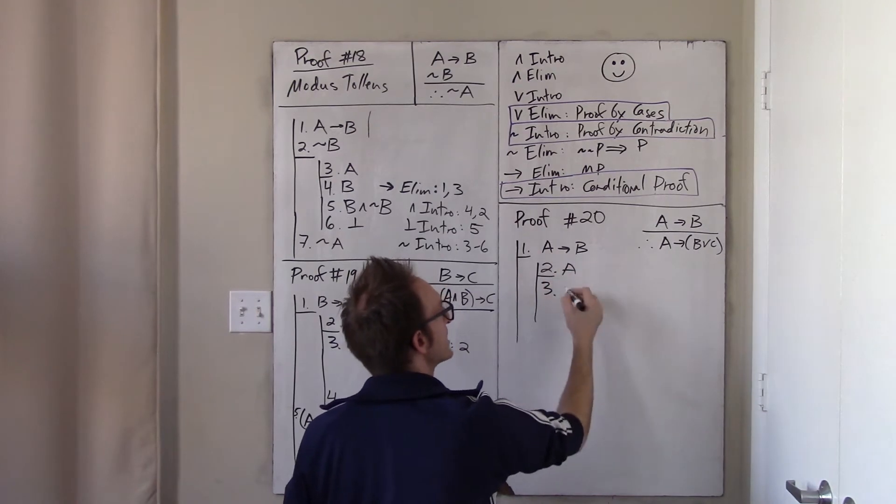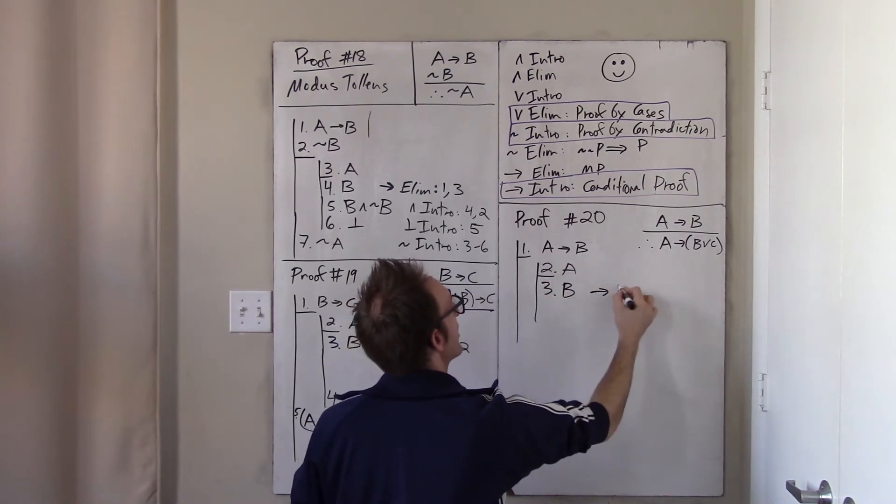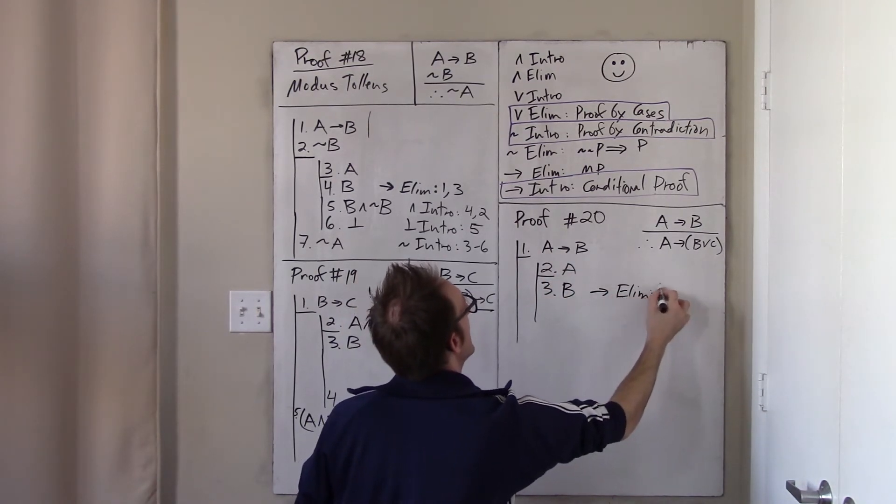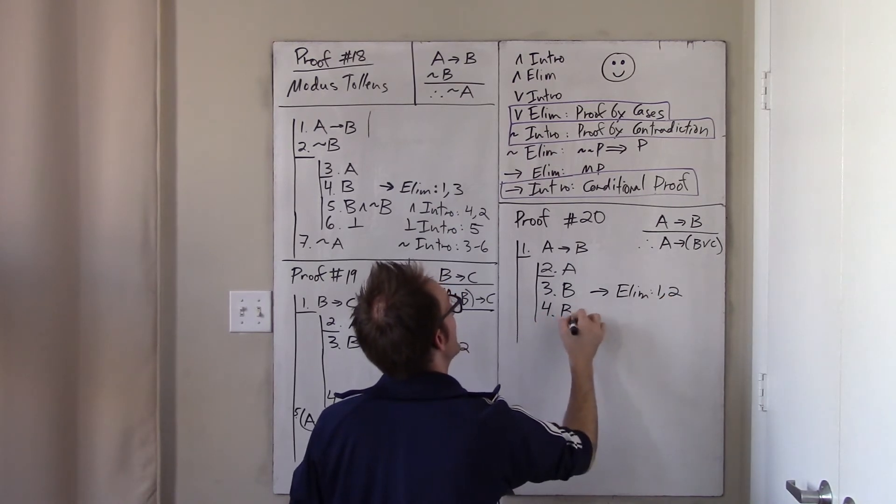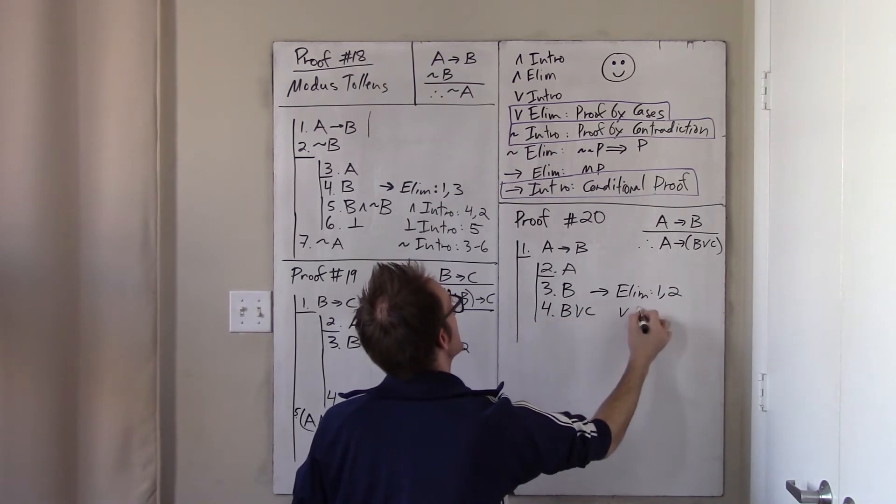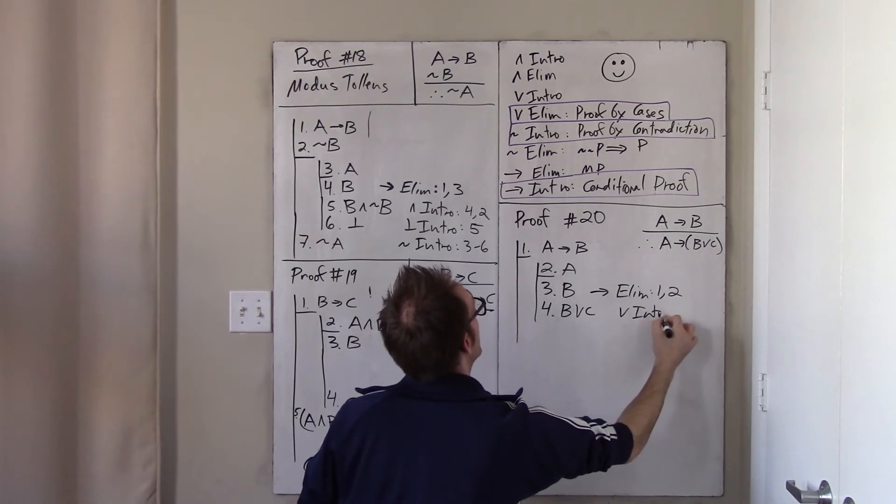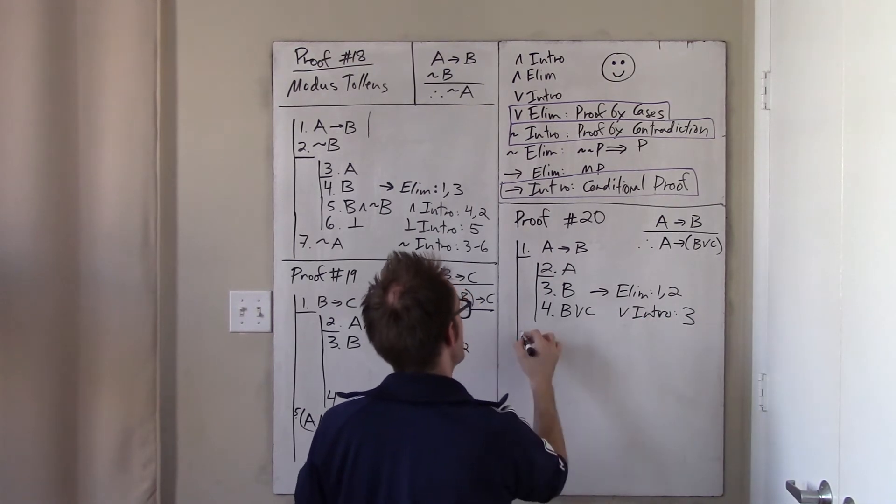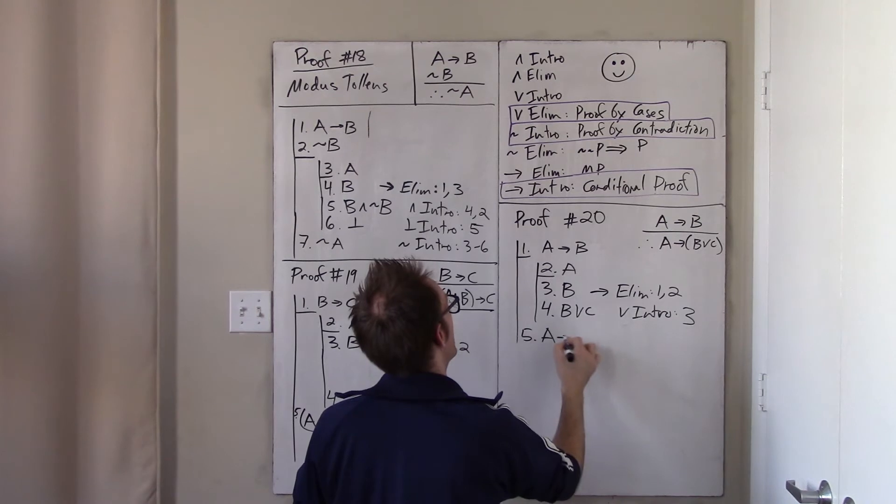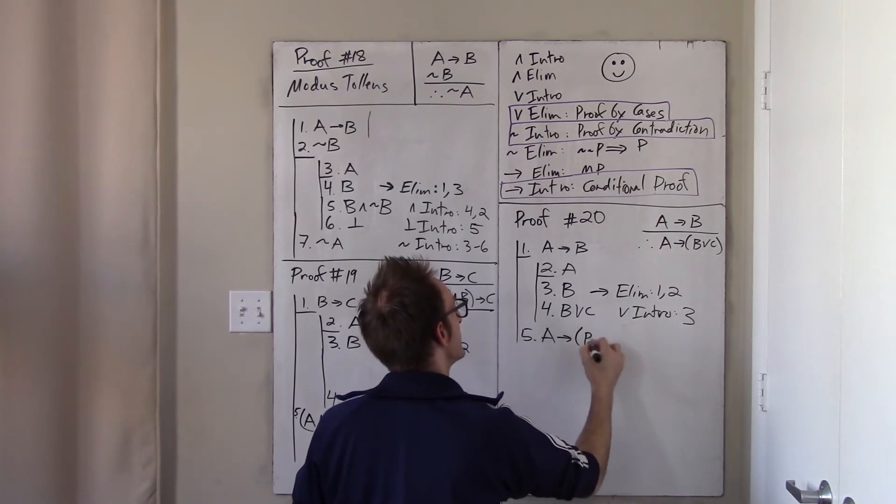immediately from 1 and 2 I get B, arrow e-lim 1, 2, and immediately from that, I get B or C by or intro 3. And so, I have now established if A then B or C. I assumed A, I derived B or C, I conclude if A then B or C.